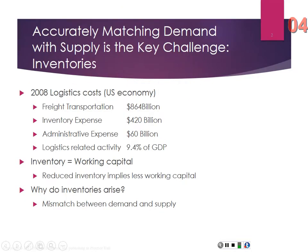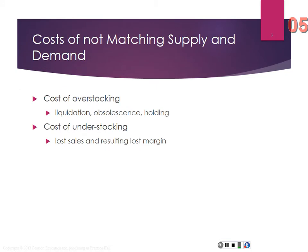You don't want to have no inventory — you want to make a conscious decision about what kind of inventory to carry. Chapter 6 talks about different types of reordering systems and levers for improvement. These statistics are dated — 2008 U.S. logistics costs: freight transportation was $864 billion, inventory expense was $420 billion, administrative expense was $60 billion, and logistics-related activity was almost 10% of GDP.